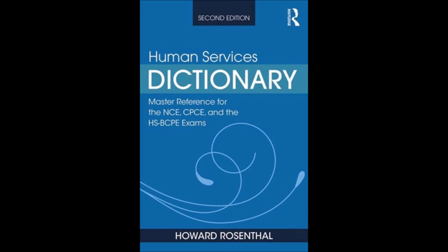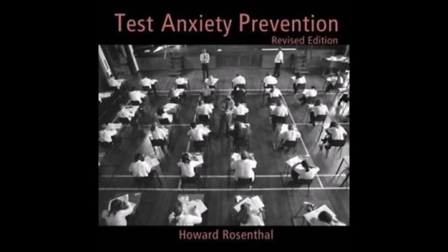Term five: placater communication style, P-L-A-C-A-T-E-R. According to experiential family therapist Virginia Satir, this is a person who tries to please everybody. Generally, this person is described as non-assertive and never disagrees with others. Why? The person is extremely worried about how others perceive them. This is seen as dysfunctional.